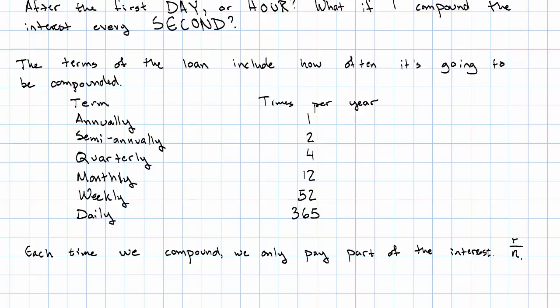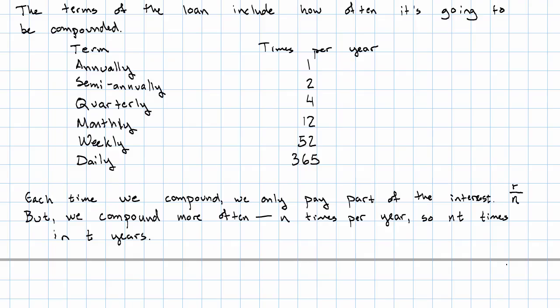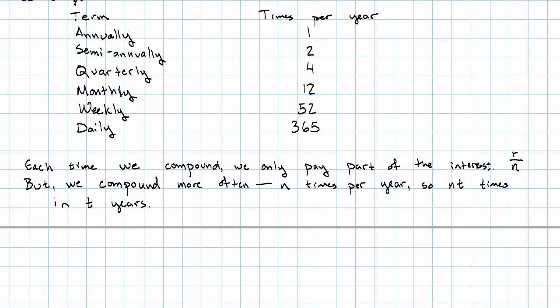So we'll take our interest rate divided by the number of times we compound. We'll compound n times in one year. So that means in t years, we'll compound n times t times.